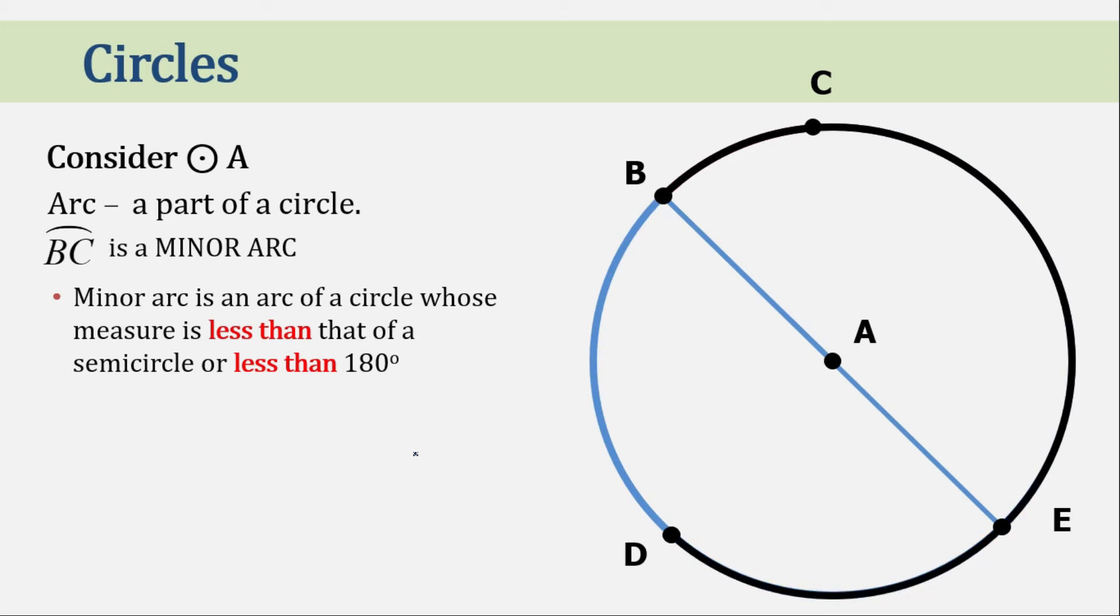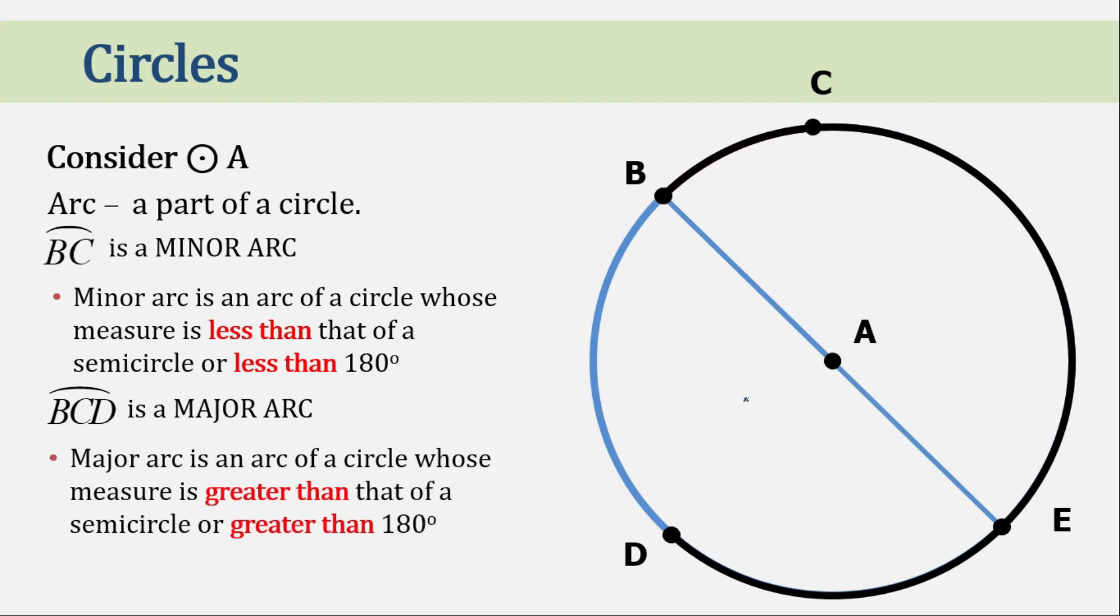Now, how about this one? We call this arc BCD. We can also name this as arc BED as long as the two ends of the arc correspond with the right letter. The middle letter doesn't necessarily have to be the same. You could choose C or E. Now, this arc is a major arc. If the minor arc measures less than 180, the major arc measures greater than that of a semicircle or greater than 180 degrees.